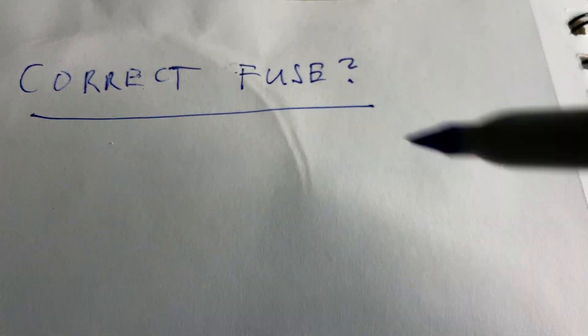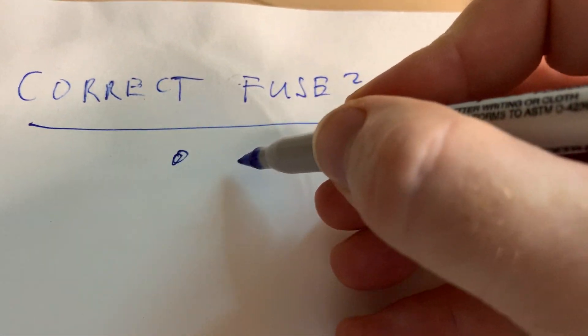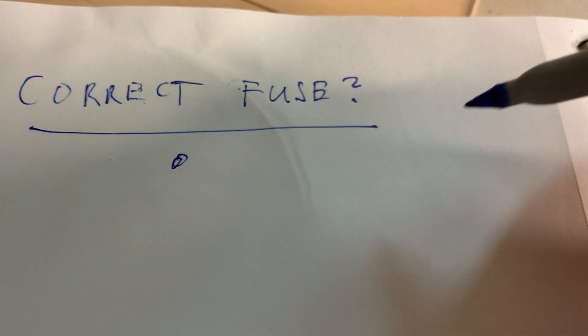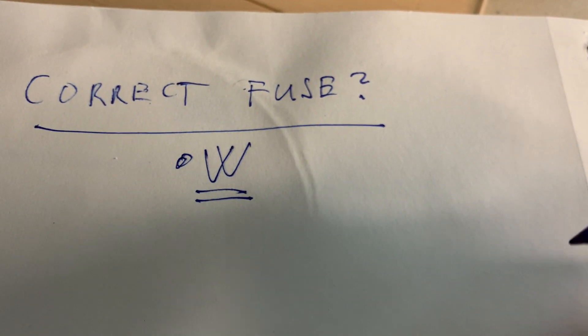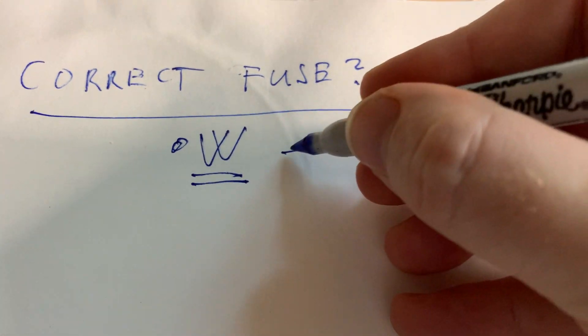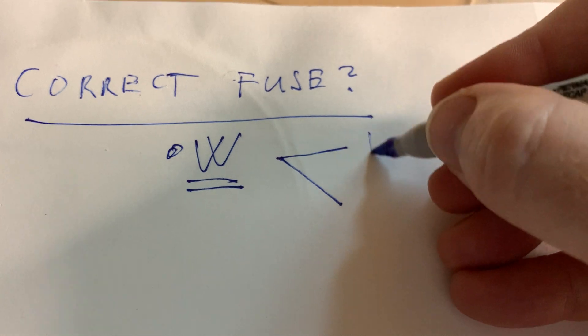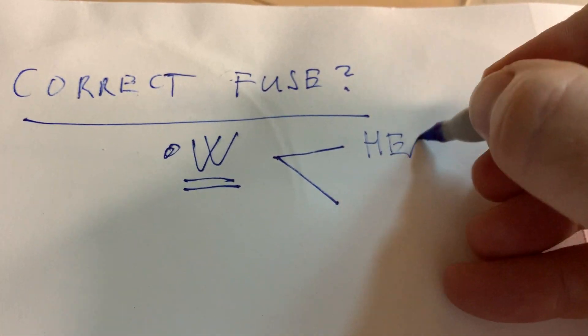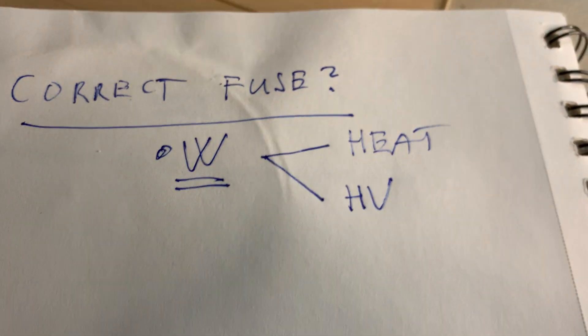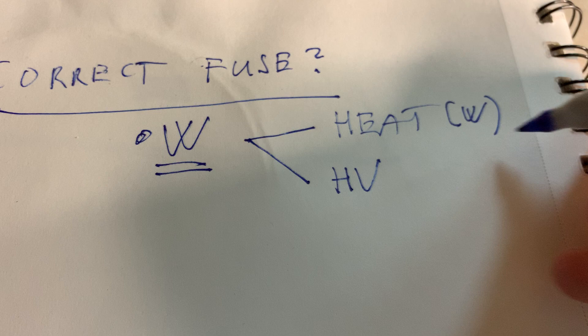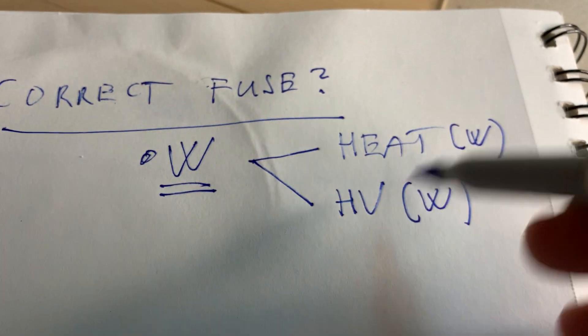Now I'm going to go through the process of how we can determine what value fuse to use for any tube amplifier. For that, we need to know two things. First, we need to know the total current and voltage the amplifier uses, and we can calculate that by adding two things together. For every vacuum tube amplifier, there's the voltage for the tube heaters, and there's also the high voltage. We need to calculate the total voltage of the filaments and the total voltage for the high voltage supply.